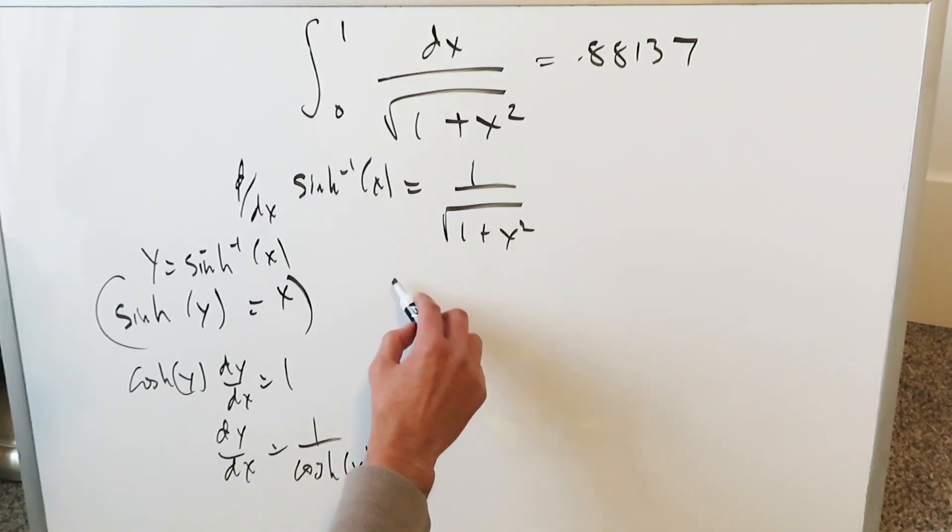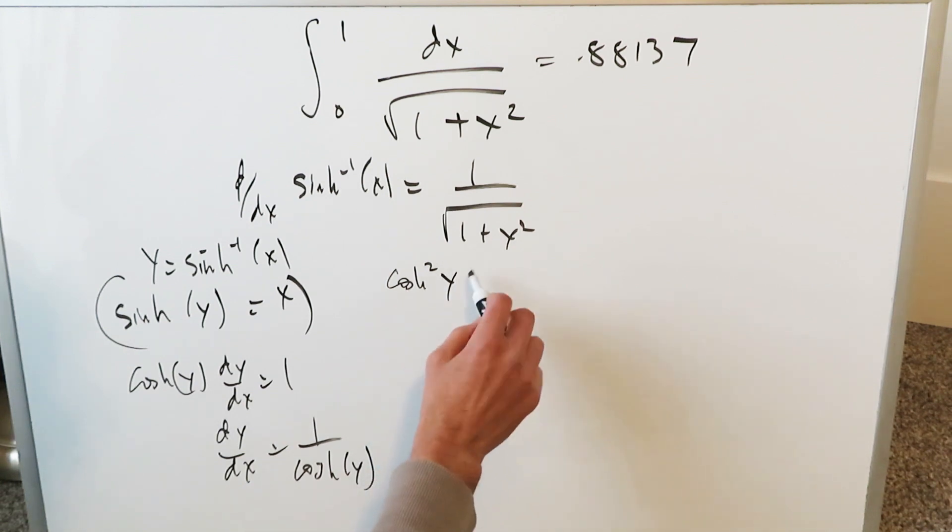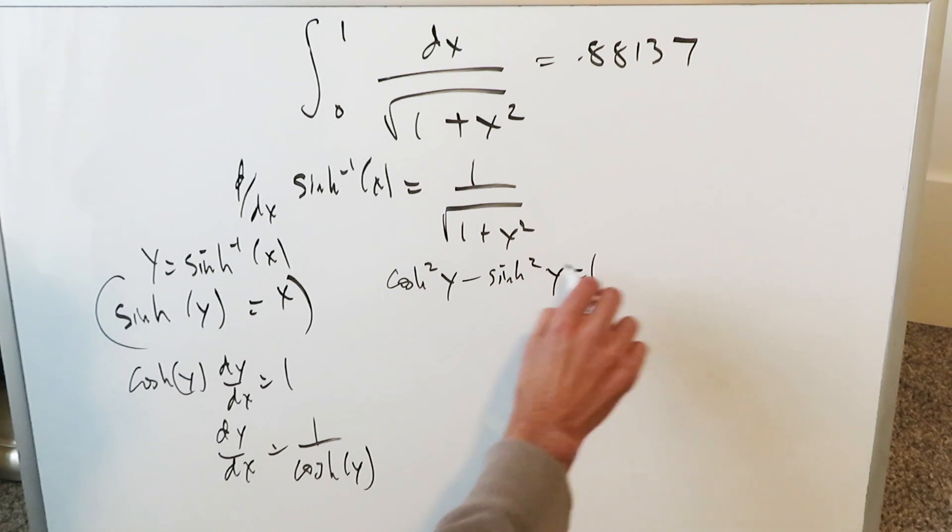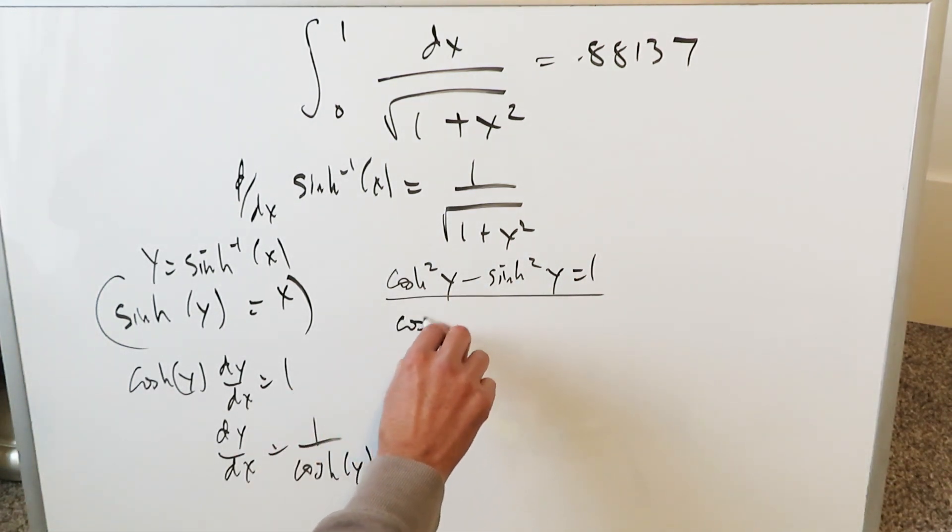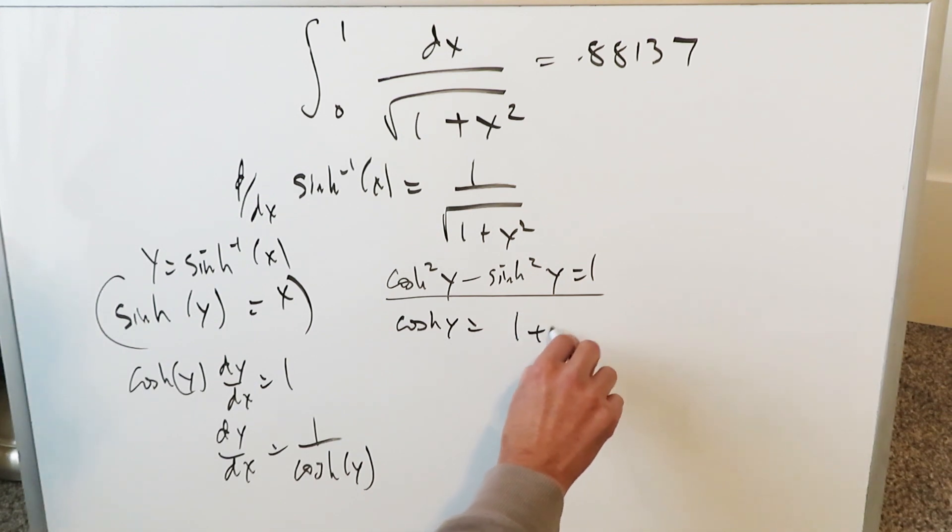Think about this very important identity. Hyperbolic cosine squared y minus hyperbolic sine squared y is always equal to 1. A very important identity. Solve for hyperbolic cosine. You'll have here 1 plus hyperbolic sine squared and then root. Bring that right here. It's 1 over root 1 plus sinh squared y.